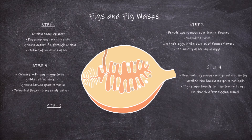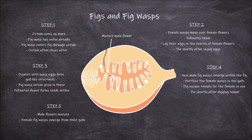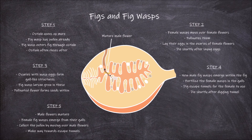The fifth step involves the male flowers maturing and the female fig wasps emerging from their galls. The female wasps collect the pollen from these male flowers by moving over them towards the escape tunnels.